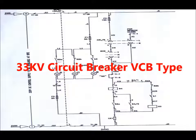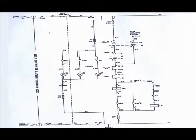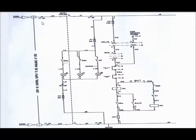Here the closing circuit diagram for the 33kV BCB type circuit breaker has been shown. There are two terminals for 224V DC supply — for the closing operation and also for TC1, the trip coil 1.